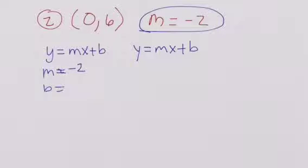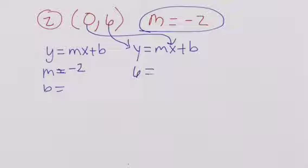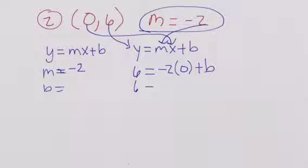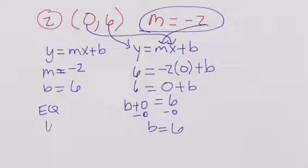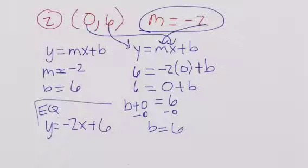I only have one ordered pair, so 6 goes in for y and 0 goes in for x. So 6 equals negative 2 times 0 plus b, which gives 6 equals 0 plus b. b is not on the left, so symmetrical: b plus 0 equals 6. Pair out the 0, so b equals 6. My equation is y equals negative 2x plus 6.